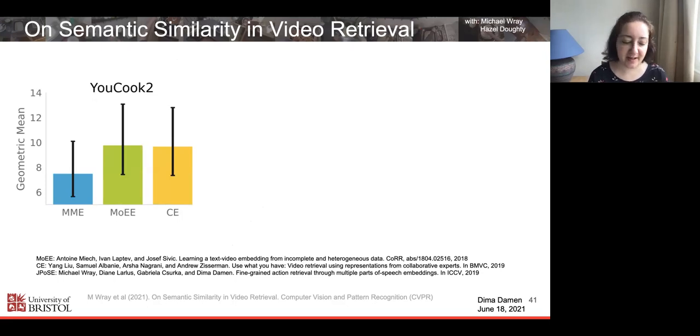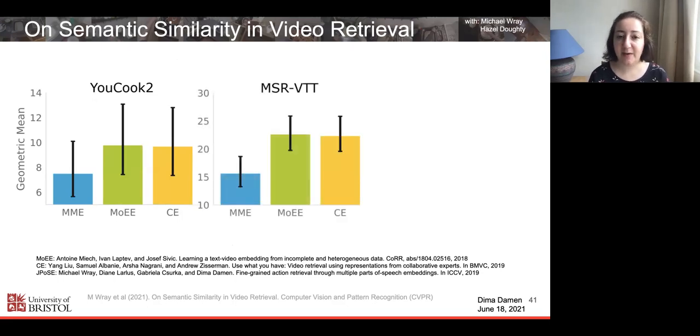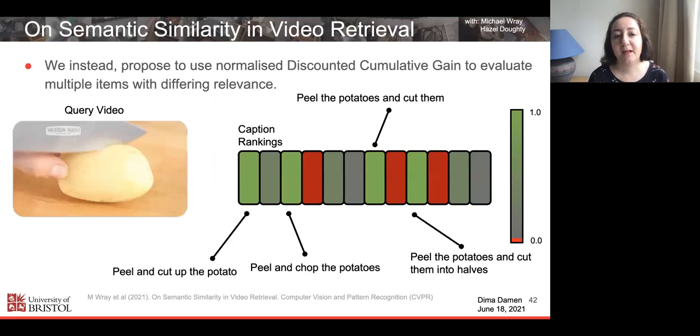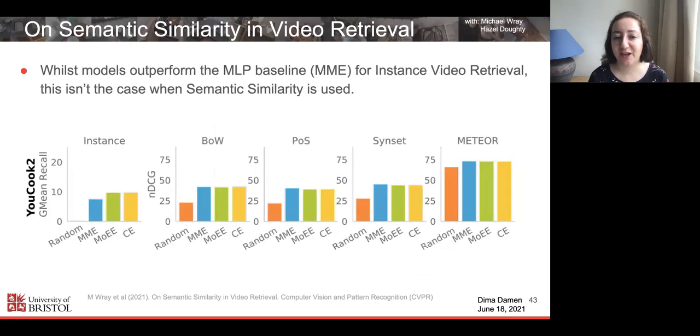With that range, we can add that as bars on the geometric mean, which is the metric used for these video retrieval tasks. We can see that the bar is very big. In fact, in many cases, it doesn't distinguish the baseline, which is MME, just an MLP, with more recent and supposedly better methods. So we propose instead to use a continuous scale of relevance between videos and captions, and using NDCG as a metric. When we do so, interestingly, so the left side is the instance, the old style, and the four other ones are the proxy measures we propose.